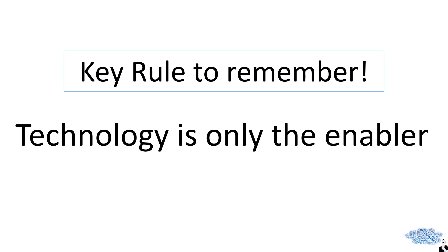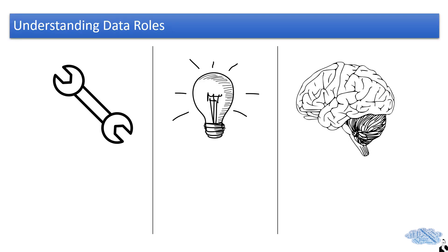When we talk about people within data, there are three brackets or areas of expertise. The first is engineering. Your engineering team have the mindset and responsibility for the scalability of your data sets, reliability of your platform, and the data quality that you're pushing out — including your database analysts and DBAs. This is a really good foundation to any data strategy because it helps with the standardisation of data and brings out a single version of the truth.